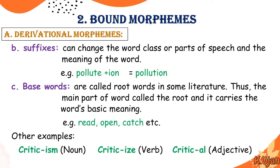For example, the base word is 'critic.' Adding '-ism' makes 'criticism,' which is a noun. Adding '-ize' makes 'criticize,' which is a verb. And 'critical' is an adjective. So the base word 'critic' can be used to make words of different word classes through derivational morphemes.